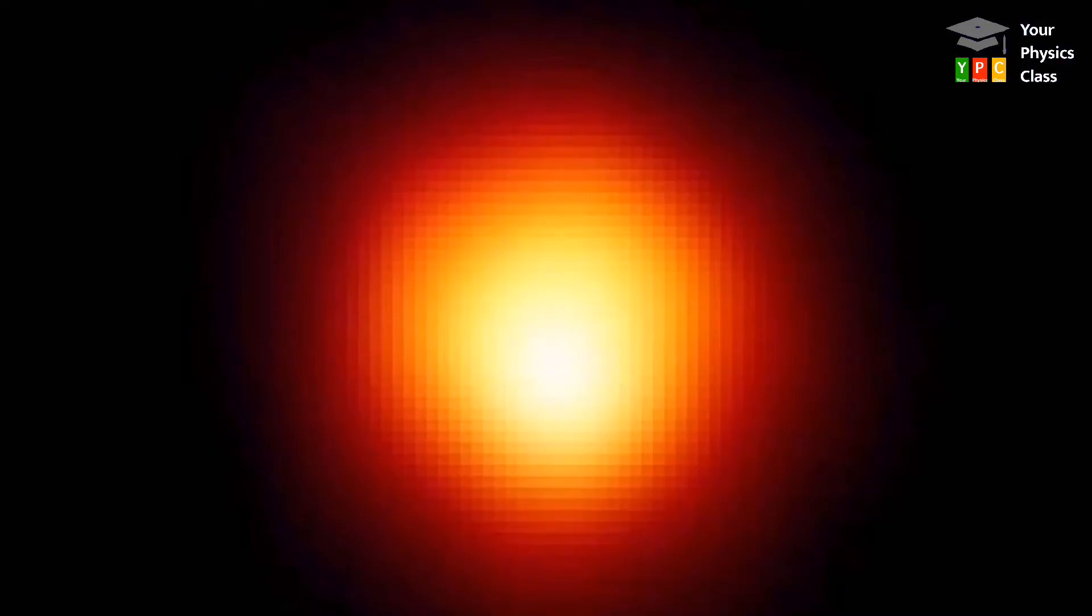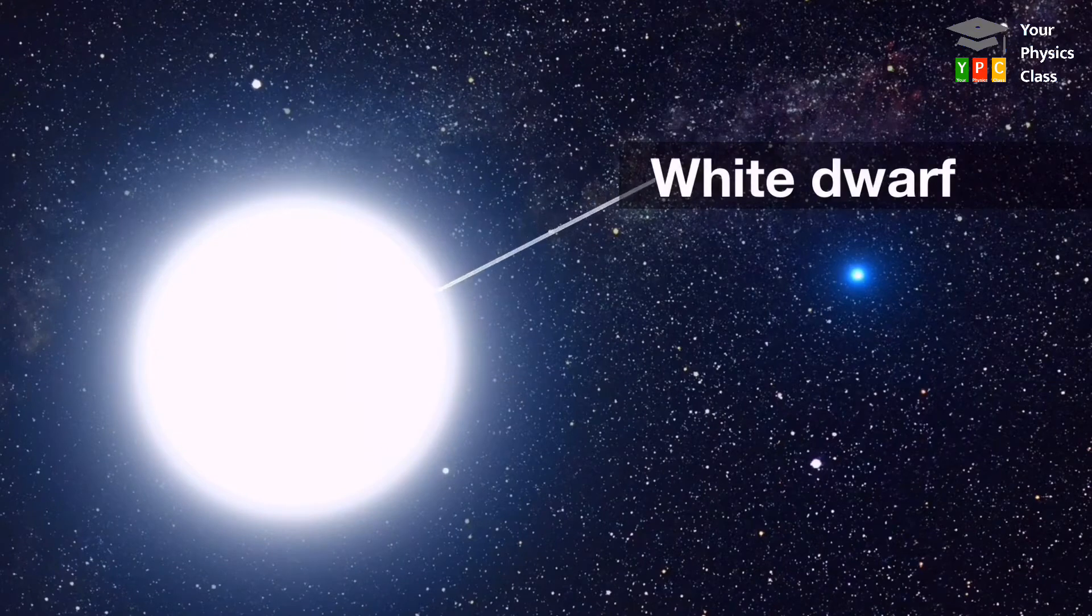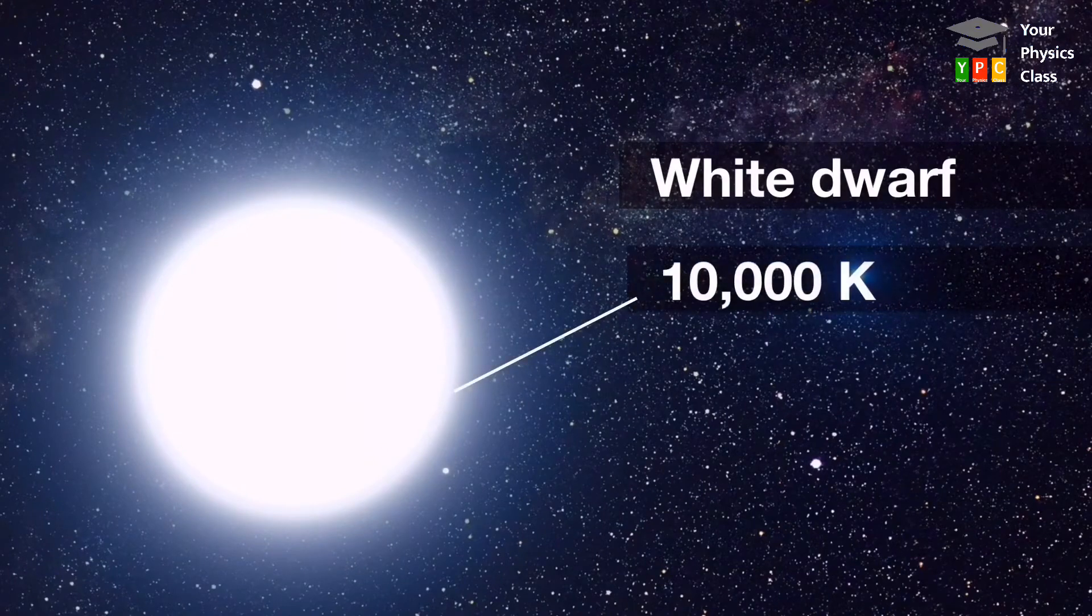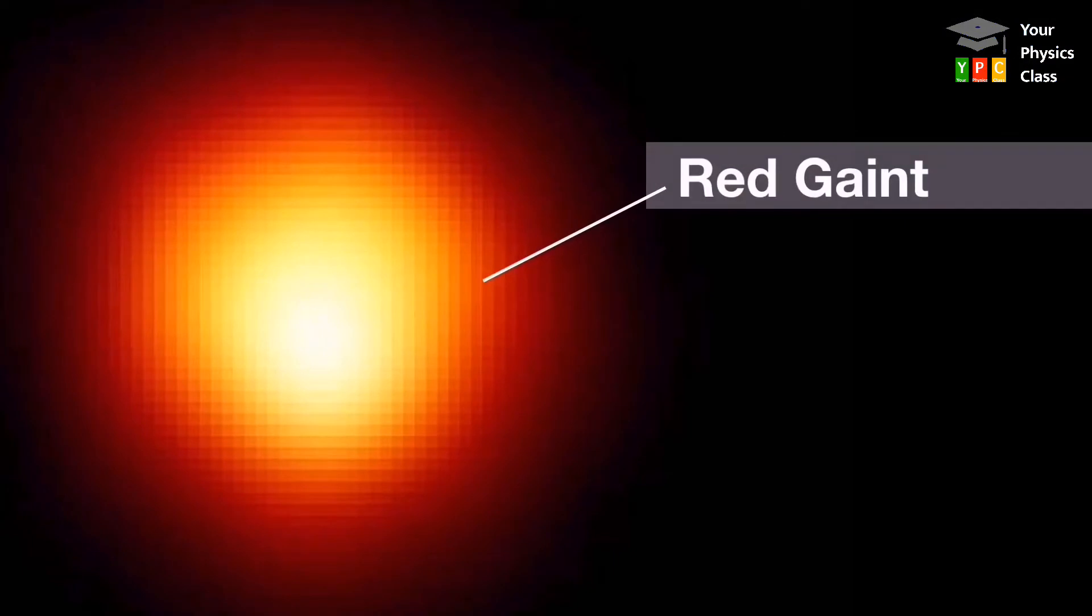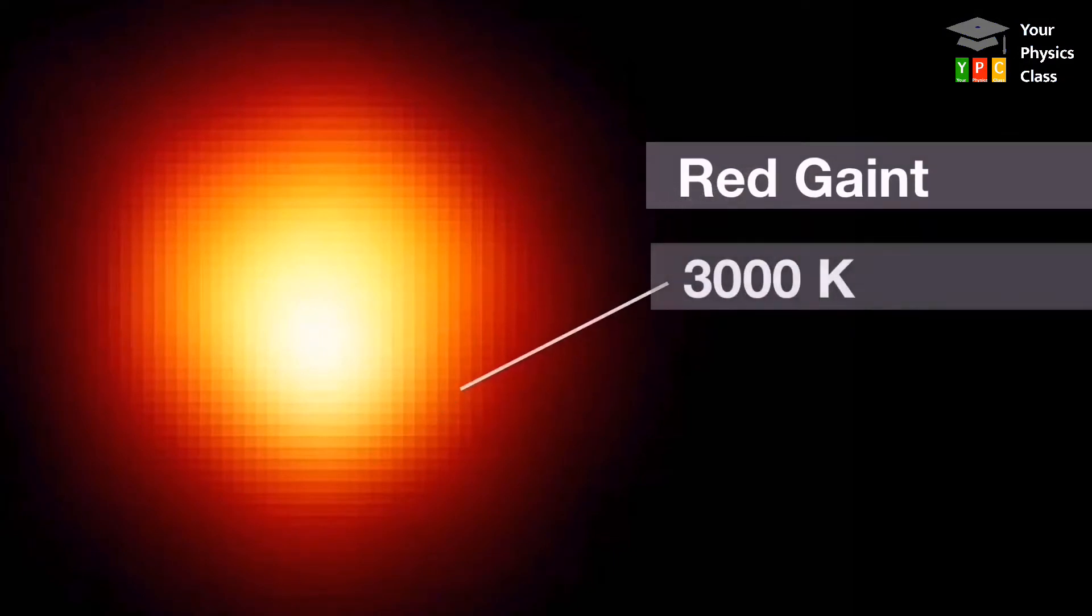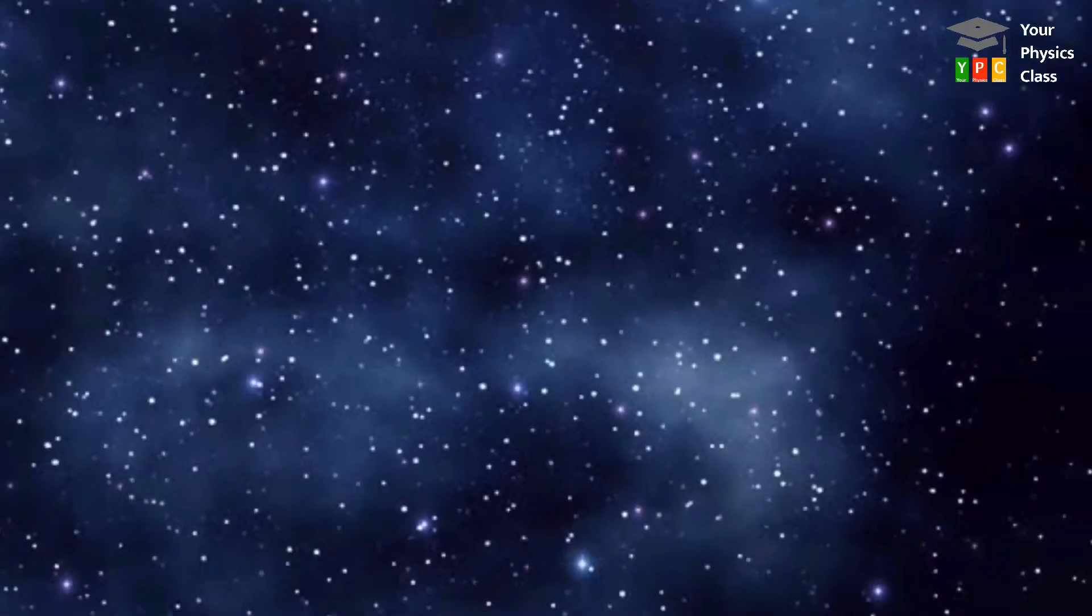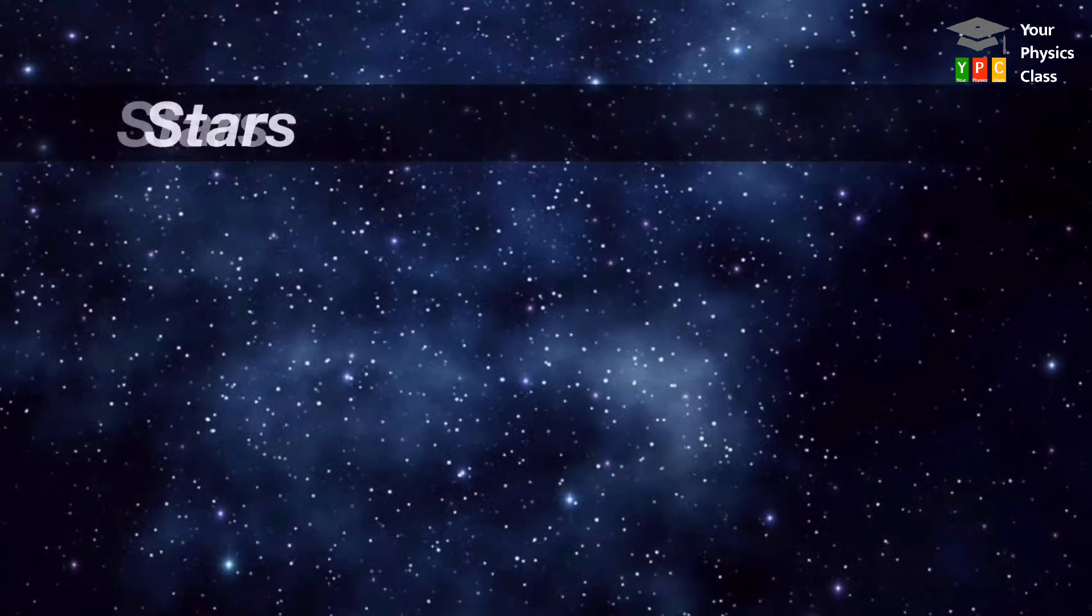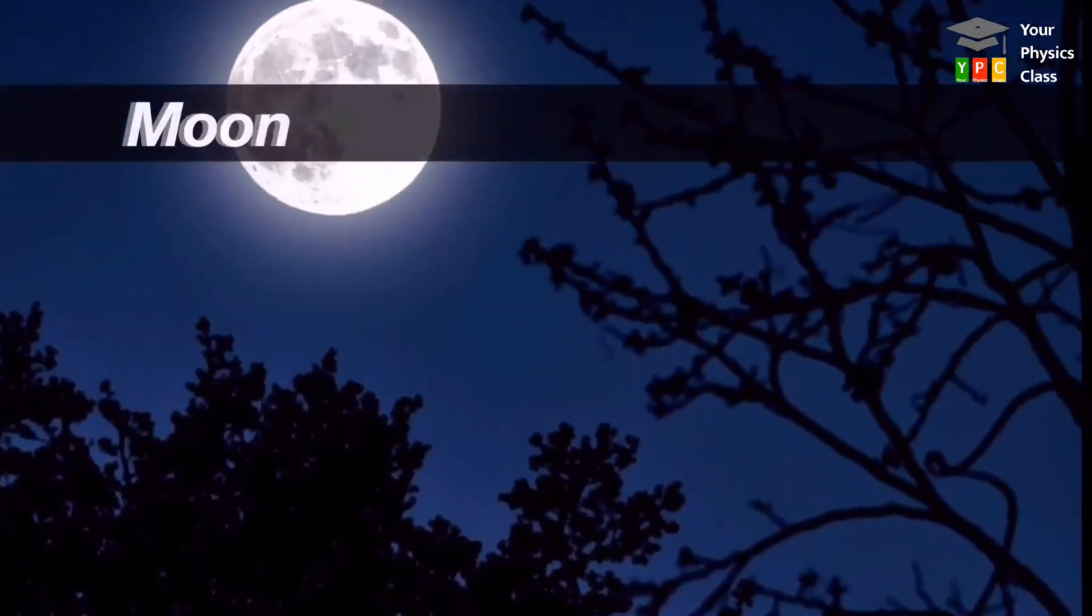Have you heard of white dwarfs and red giants? White dwarfs are hot stars with surface temperature 10,000 Kelvin, while red giants are cooler corresponding to surface temperature 3000 Kelvin. Wien's displacement law is useful to determine the temperature of distant stars, sun, and moon.